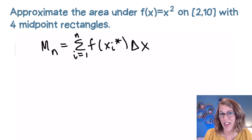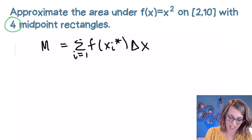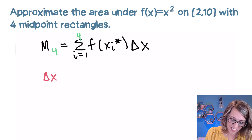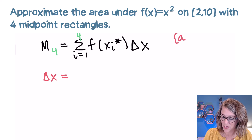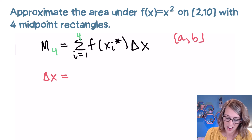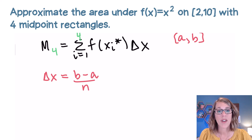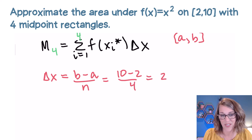Let's customize the formula for our example. The total number of rectangles is 4, so I replace n with 4. For delta x, in general we use (b minus a) divided by n. Our interval is from 2 to 10, so (10 minus 2) divided by 4 gives us delta x equals 2.